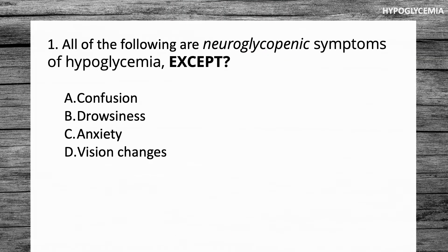Question number one. All of the following are neuroglycopenic symptoms of hypoglycemia, except. So remember the word they're using is except. We have A, confusion; B, drowsiness; C, anxiety; and D, visual changes. Take a moment and choose your answer.